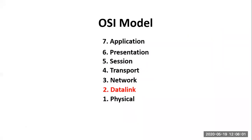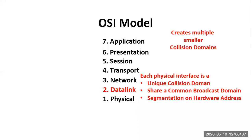Stepping up to OSI layer two, known as the data link layer — if you have a layer two device with 12 ports, you now have 12 unique collision domains. A switch creates multiple smaller collision domains, but we still maintain a single common broadcast domain. Layer two devices make forwarding decisions on hardware addresses. If you have history in this field, you'll know DIP switches, jumpers, etc. — or what we have today, the MAC address, media access address, which is an example of a hardware address.